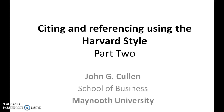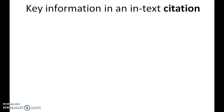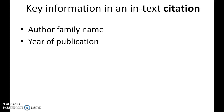These are all covered in detail in the supporting document mentioned at the start of part one. It is important to point out that all citations have to contain the following information. The author's family name — so in my case if you were citing me it would be Cullen, not John Cullen, not Dr. John Cullen — just the family name for an in-text citation. The second thing is the year that the material was published, just the year.